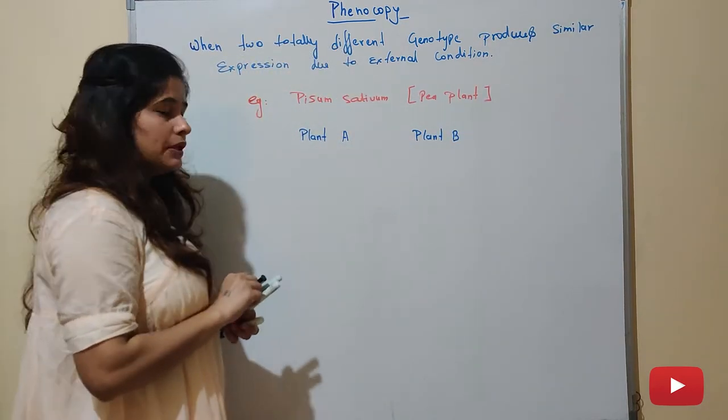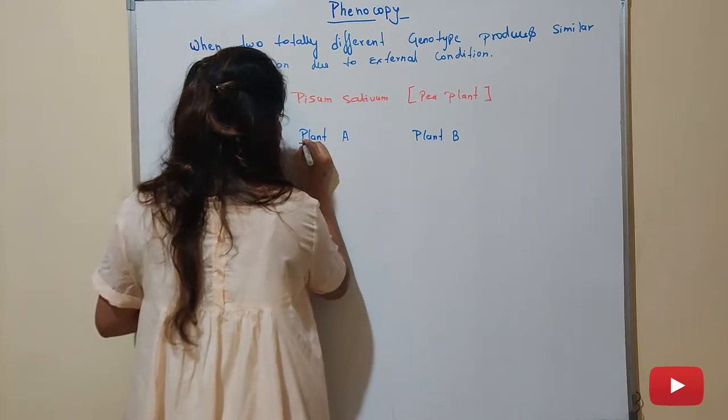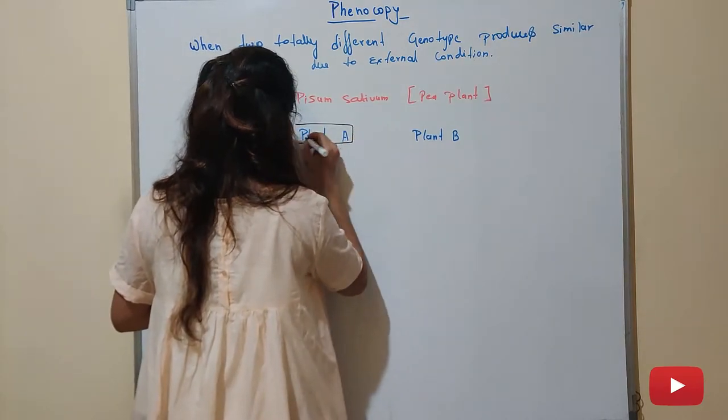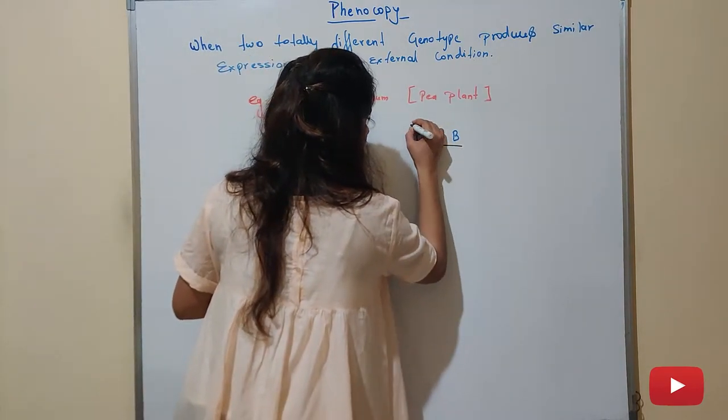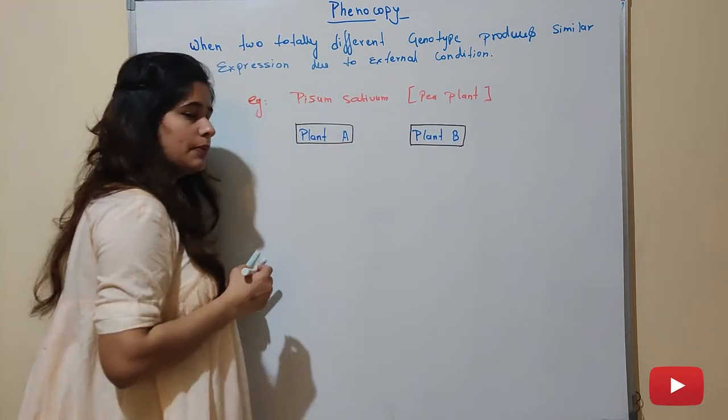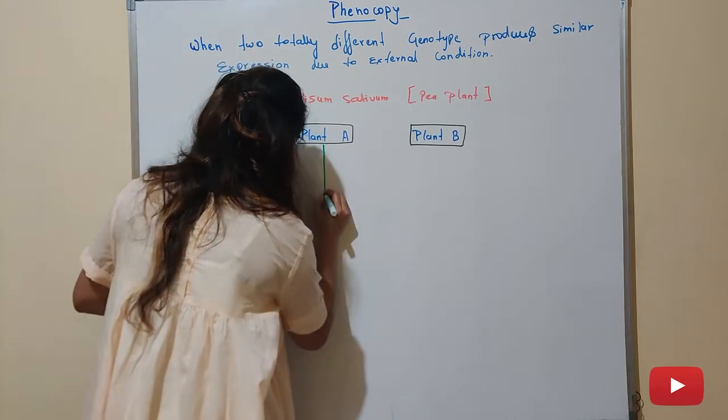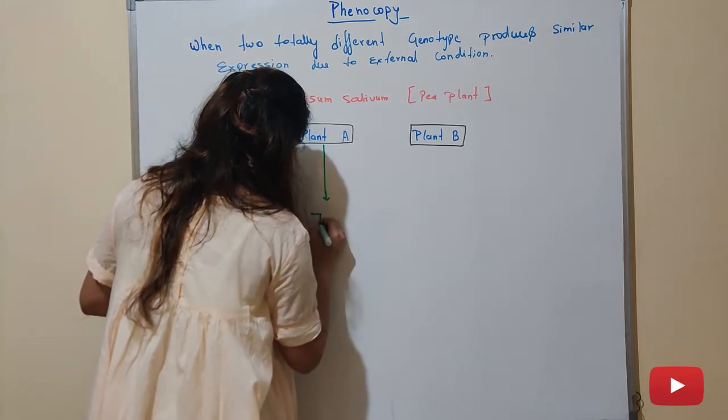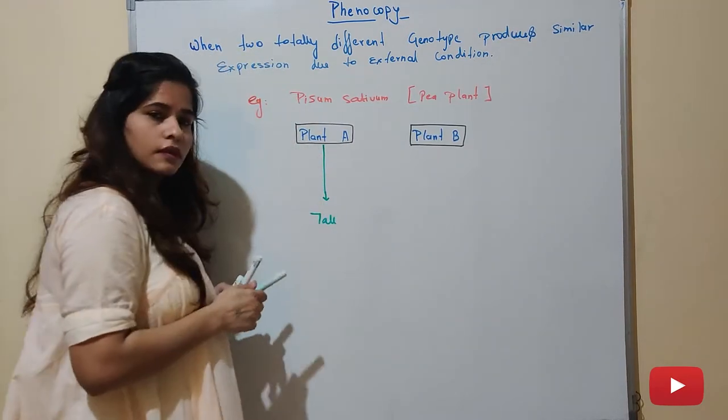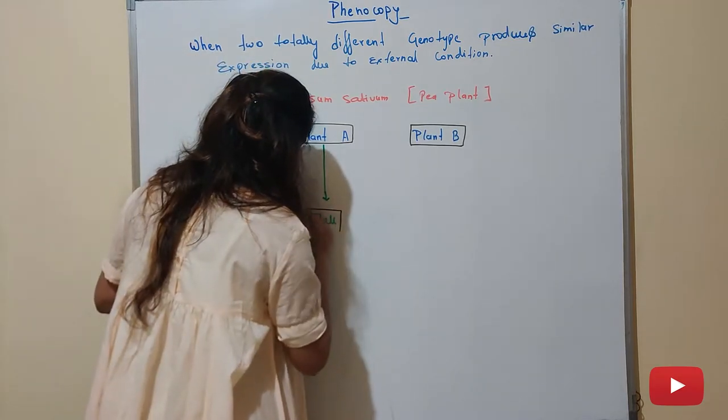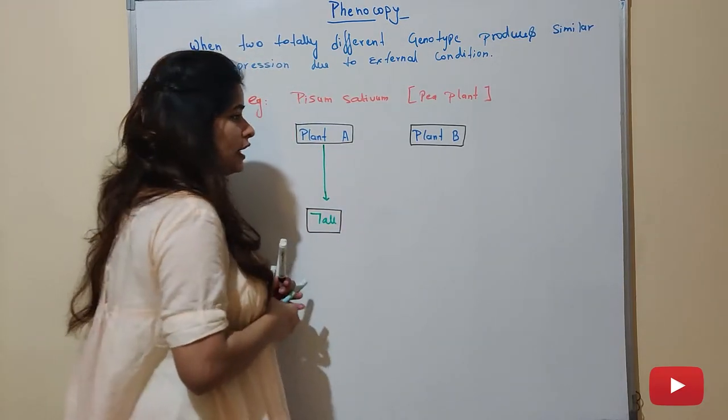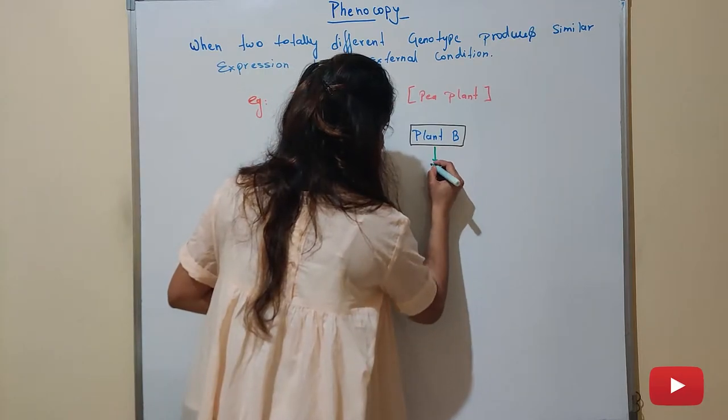Plant A and Plant B have two different genotypes. Because Plant A is a tall plant, this is tall. And Plant B is dwarf.